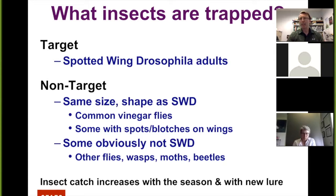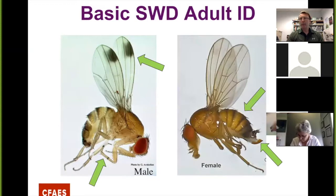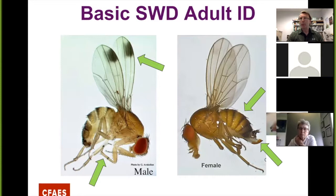The trap catch is going to fluctuate with the season, tending to increase more toward the middle and end of the season. When you put a new lure out, you'll often get an additional bump in the trap catch as well. For identification, we want to focus on the males — looking for the spot on the wing and the two rows of combs or hairs on the front leg only. For the female, she has kind of a golden body, continuous stripes that run across the back of the abdomen, and a large ovipositor with the big teeth that Celeste showed you. Those are the characters we're looking for as we play this where's-Waldo game through the sample.